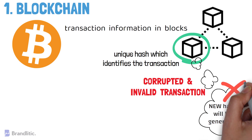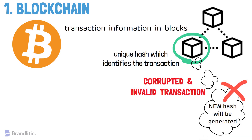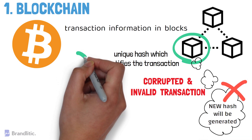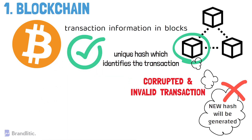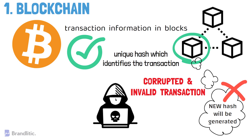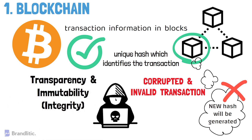This altered hash serves as evidence of a corrupted or invalid transaction, which will then be rejected by the blockchain and not recorded. On the other hand, valid transactions are published on the public ledger, which every node — that is, every participant on the network — has access to. This distributed nature of public ledgers makes it more difficult for parties to alter information, promoting transactions under strict transparency.